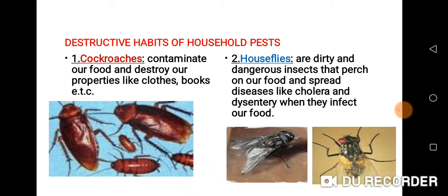House flies are dirty and dangerous insects that perch on our food and spread diseases like cholera and dysentery when they infect our food. As you can see the pictures of house flies — they are very, very dangerous to the body.